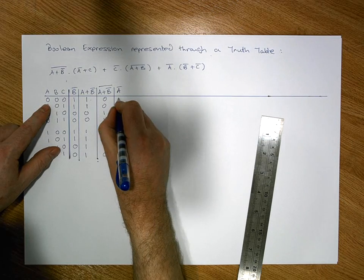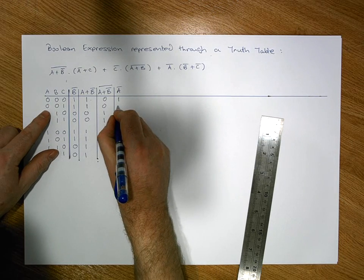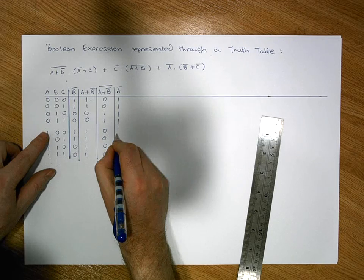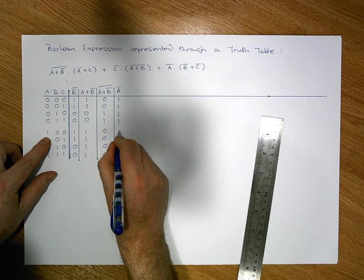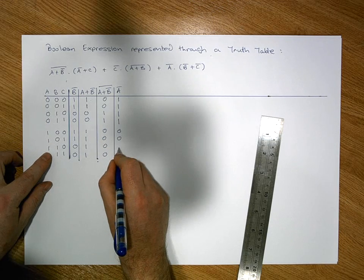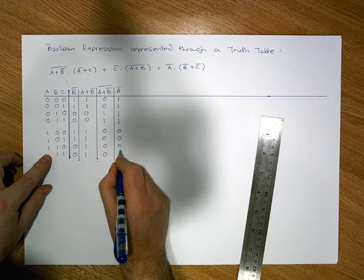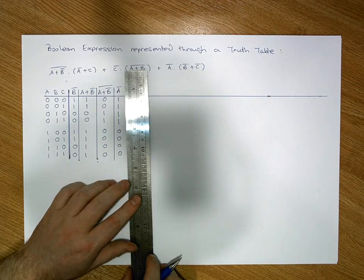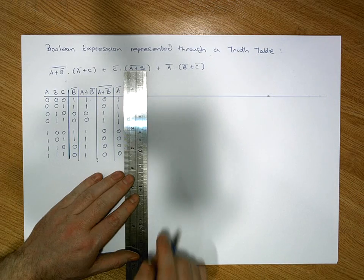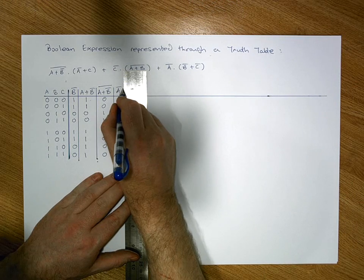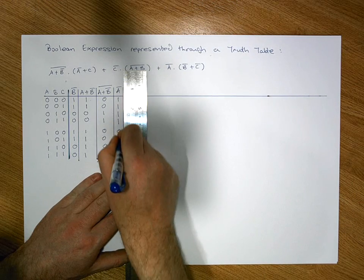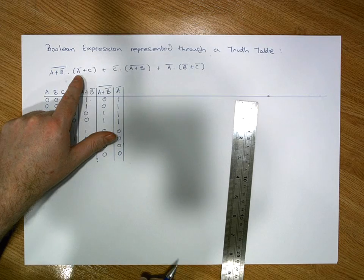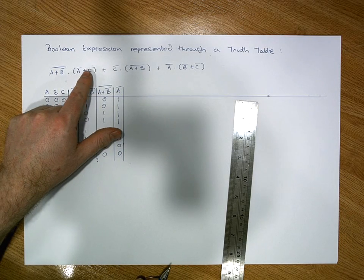Ā is the A column values negated: 0→1, 0→1, 0→1, 0→1, 1→0, 1→0, 1→0, 1→0, giving us our negated A column. Now we take those negated A values and OR them with the C column.